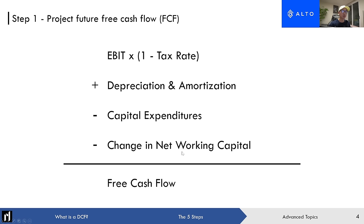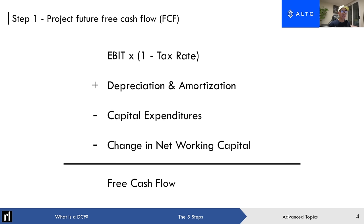Net working capital is the cash you're spending to run and operate your business on a day-to-day basis. People often say it's just current assets minus current liabilities, but it's actually current operating assets minus current operating liabilities. The word 'operating' means assets and liabilities related to the operations of your business. For example, cash is not a current operating asset in this sense, but accounts receivable is — it's directly correlated to operations. Similarly, short-term debt is a current liability but doesn't tie into day-to-day operations.